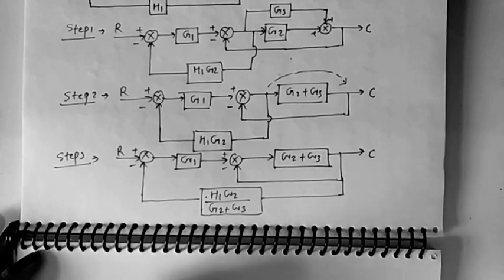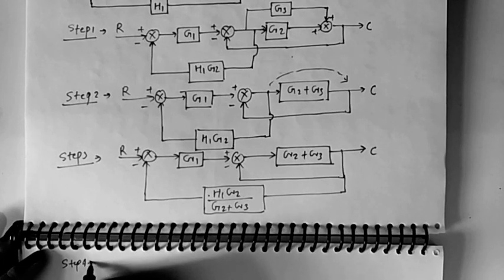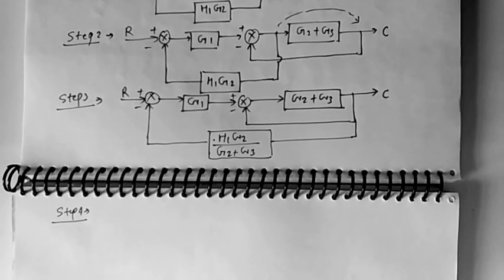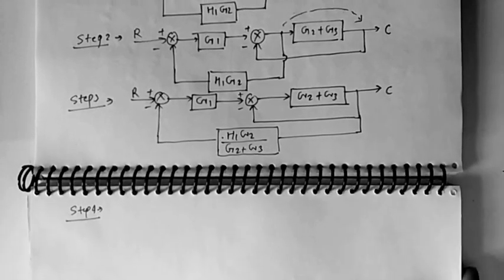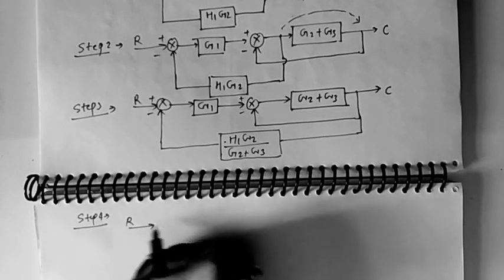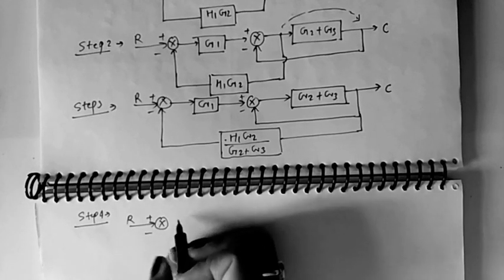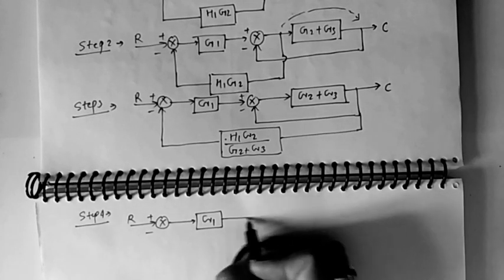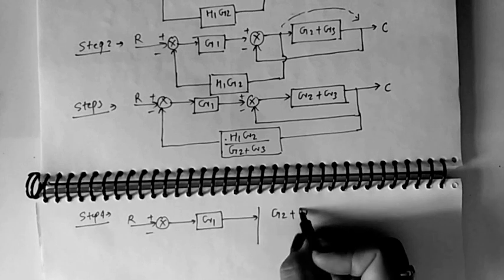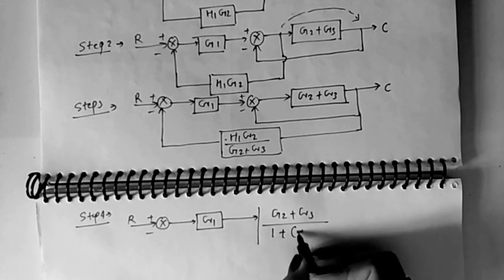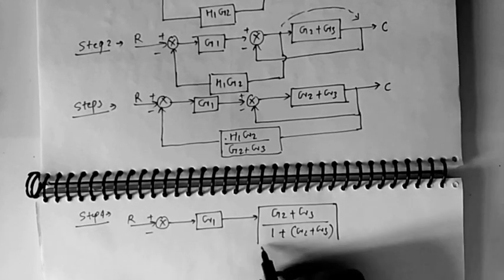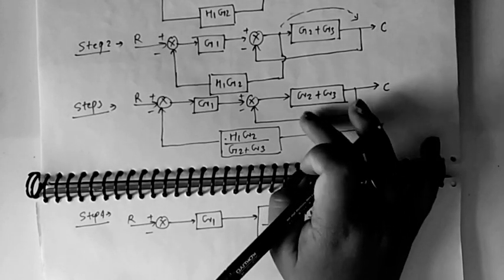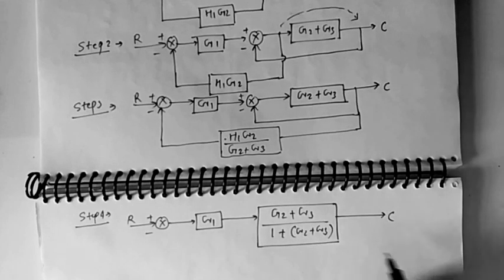Step 4: The innermost block is the unit feedback loop. Solve this first. Make sure in the exam you solve block diagram reduction step by step, because if you try to do it all at once there will be problems. So from here we get G2 plus G3 upon 1 plus G2 plus G3, where H is 1 (unit feedback).